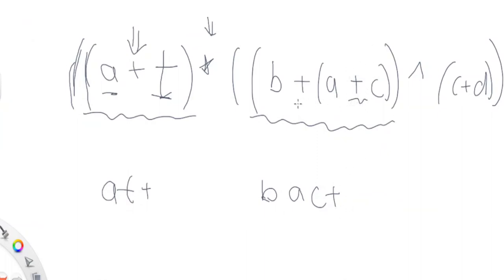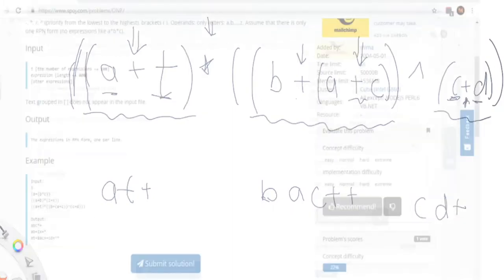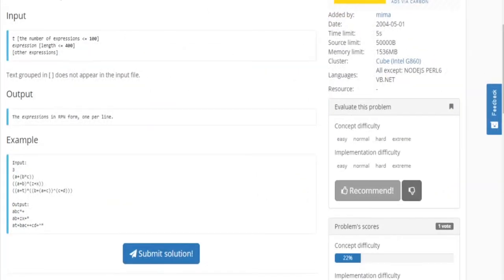Then we have another plus sign because there are two plus signs here — one for the inner `b + a + c` expression and one for the outer parentheses. So we get `b a c + +`. After that we need to evaluate the next parentheses, which gives `c d +`, displaying the letters first and then the plus operation.